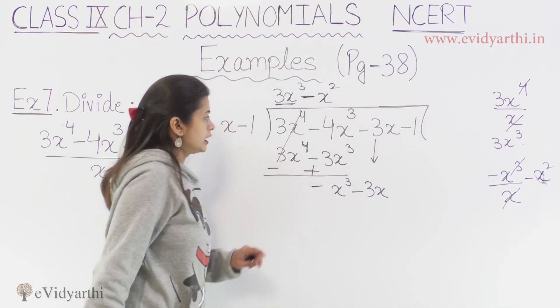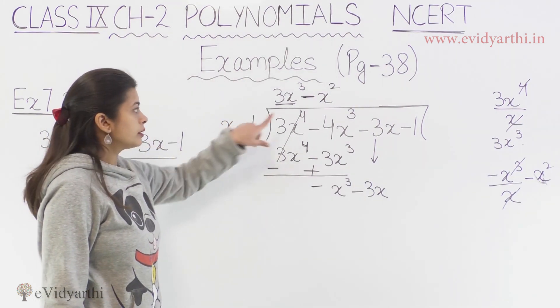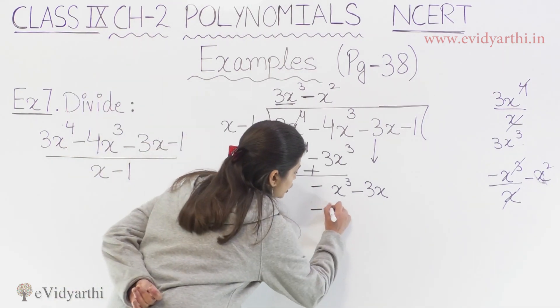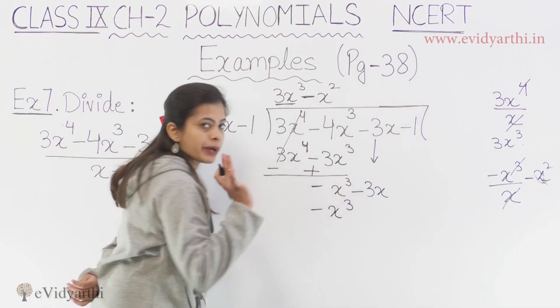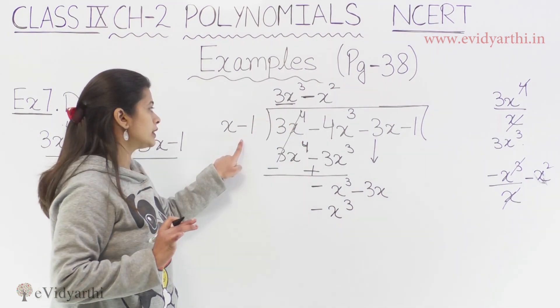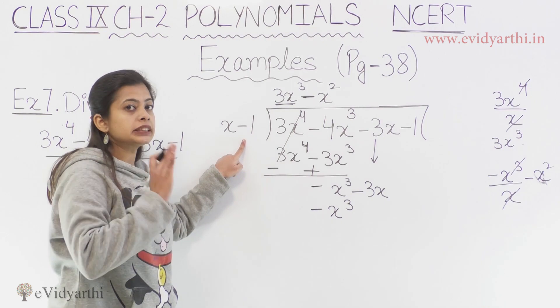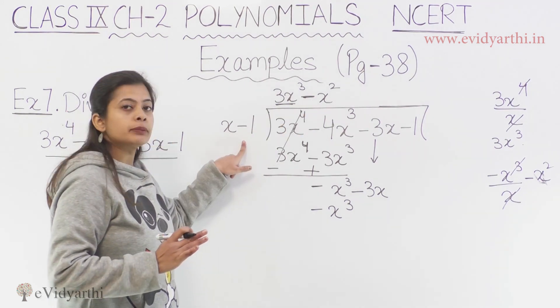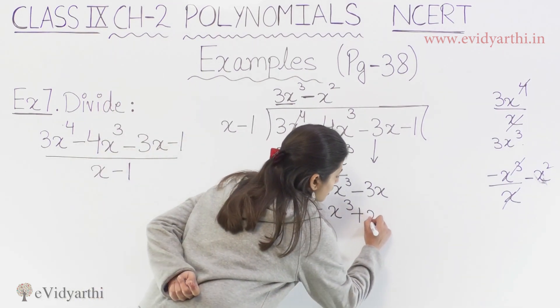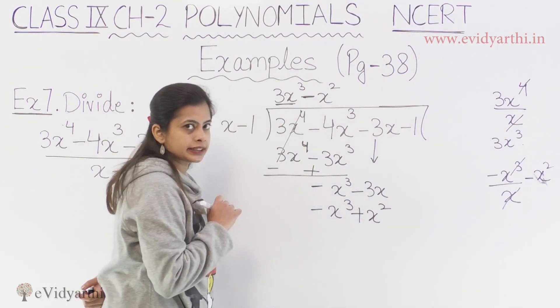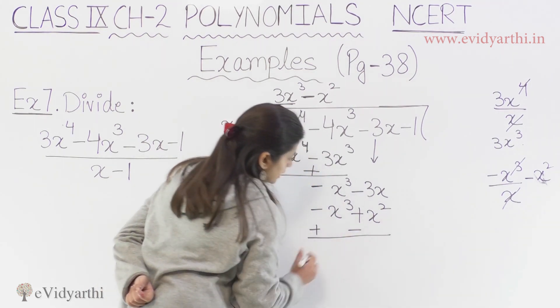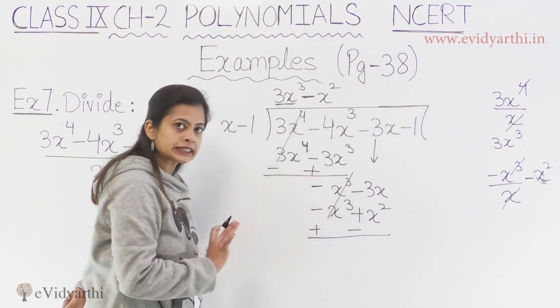Basically, if I multiply x by minus x square, we will get minus x cube. This we have matched. Now, we have minus x square ko kis se multiply karna hai? It will get multiplied by minus 1. So, if we multiply again, we will get plus x ka square. So, here we have plus x ka square. Now if we solve this, we will see that this term will cancel out.